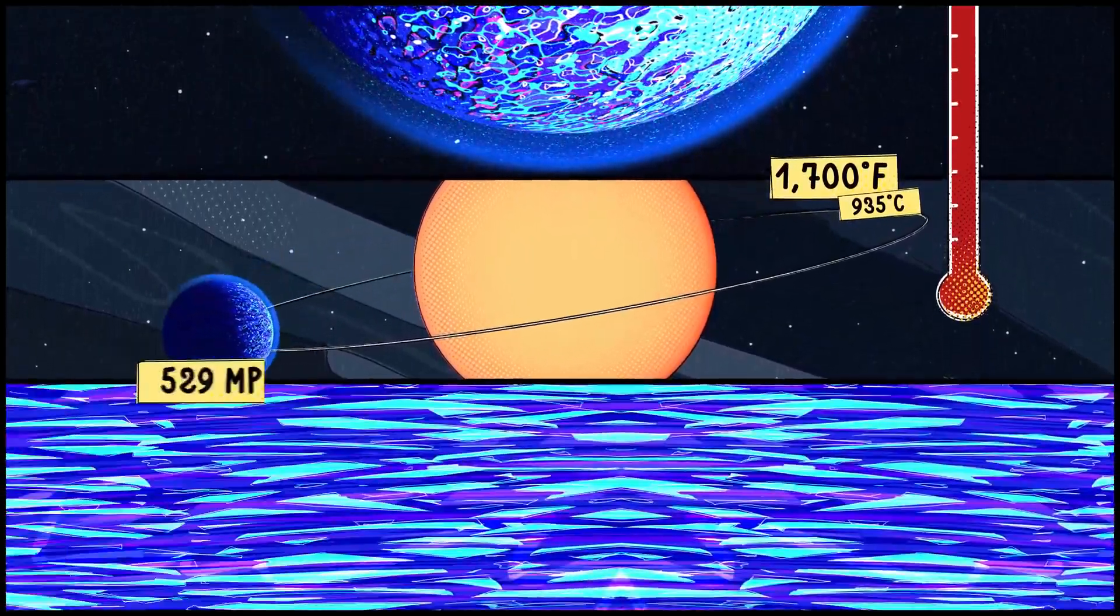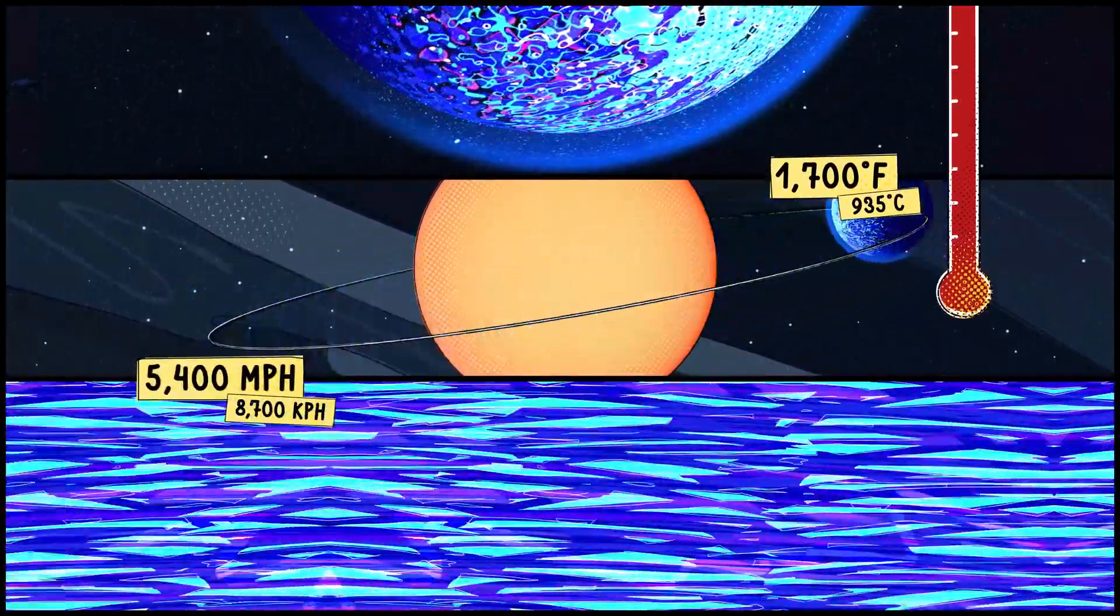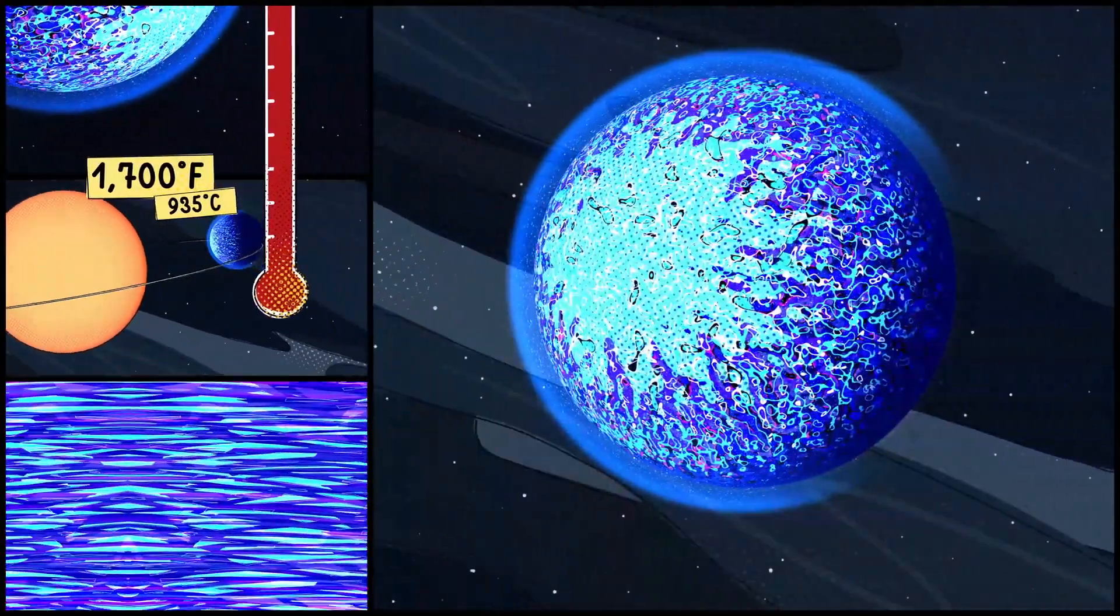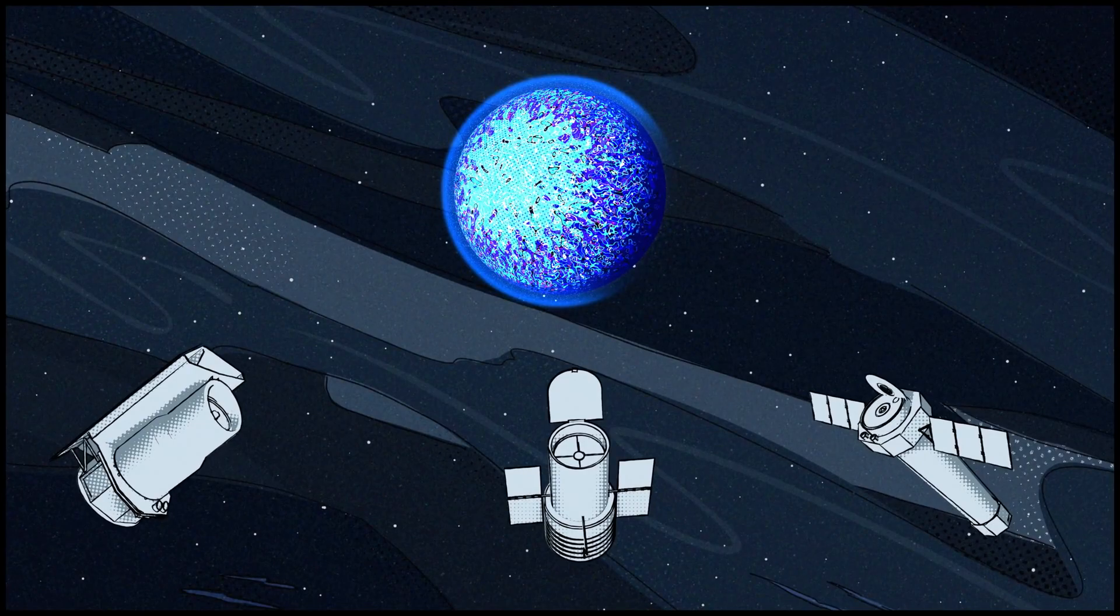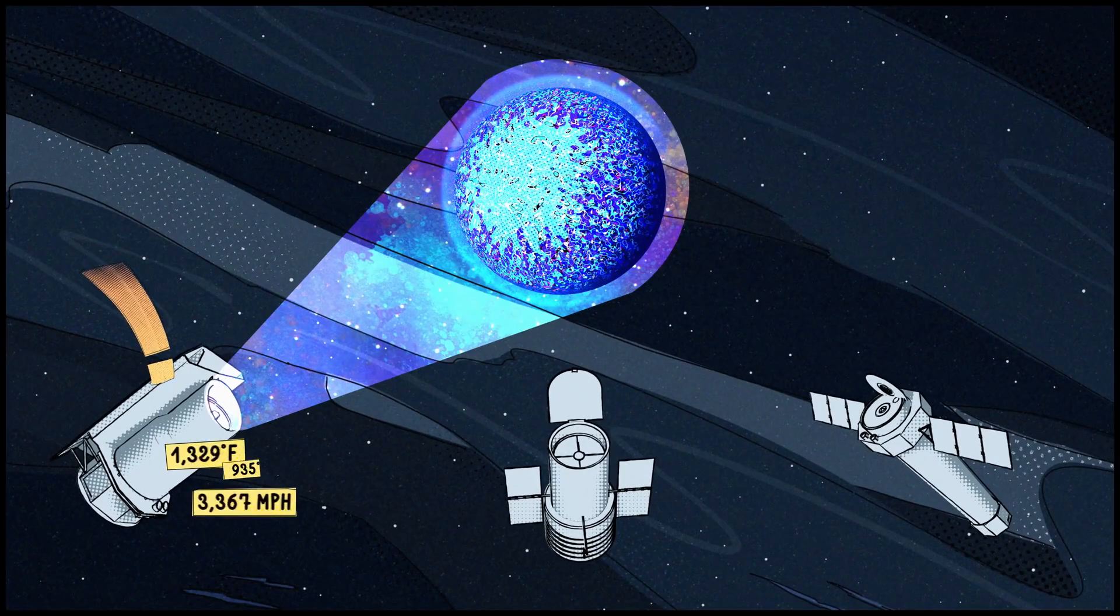Its winds howl at more than 5,400 miles per hour. HD 189733 b has been a favorite target of our space telescopes. Spitzer measured its temperature and winds.